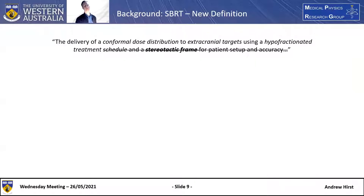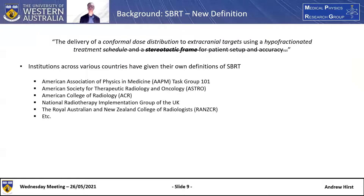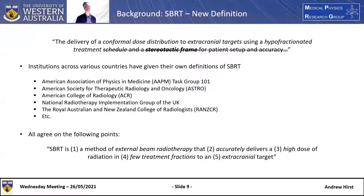So if the stereotactic frame is no longer used and this old definition is now obsolete, how is SBRT now defined? Different institutions across various countries have all given their own definitions of SBRT. Instead of going over individual definitions, I just want to talk about the points they all agree on: SBRT is a method of external beam radiotherapy that accurately delivers a high dose of radiation in few treatment fractions to an extracranial target. I want to go over each of these points individually to really understand what SBRT is and what I'll be doing in this project.